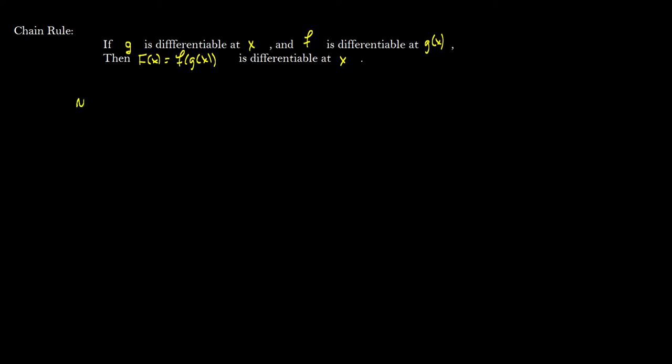What if we have the function y is equal to e to the x squared? We're going to say that g of x is equal to x squared. We know this is differentiable at x — g prime of x is equal to 2x.